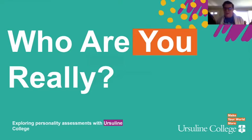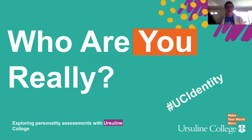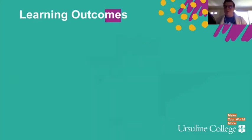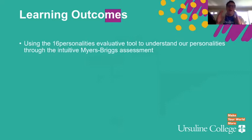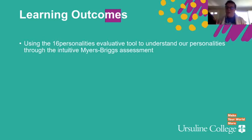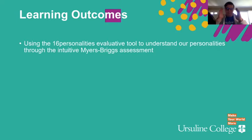If you'd like to shout us out on any social media, you can use UC Identity to do so. But today, we're going to take a little bit of time to assess our personalities. So let's talk about some learning outcomes. This is all about you today. We're going to use the 16 personalities evaluative tool to understand our personalities through the intuitive Myers-Briggs assessment. If anybody has taken a Myers-Briggs before, this 16 personalities is going to be something very unique, and I'll explain why a little bit later.